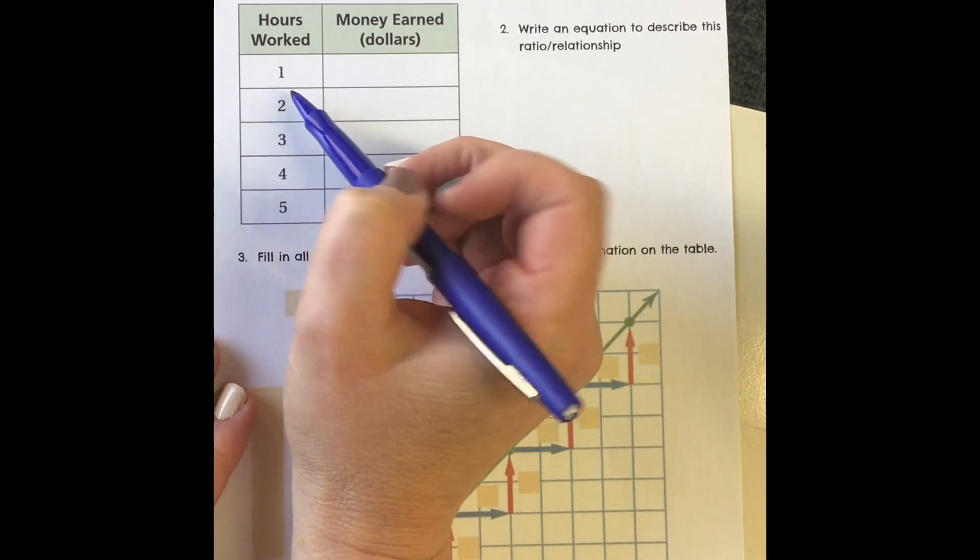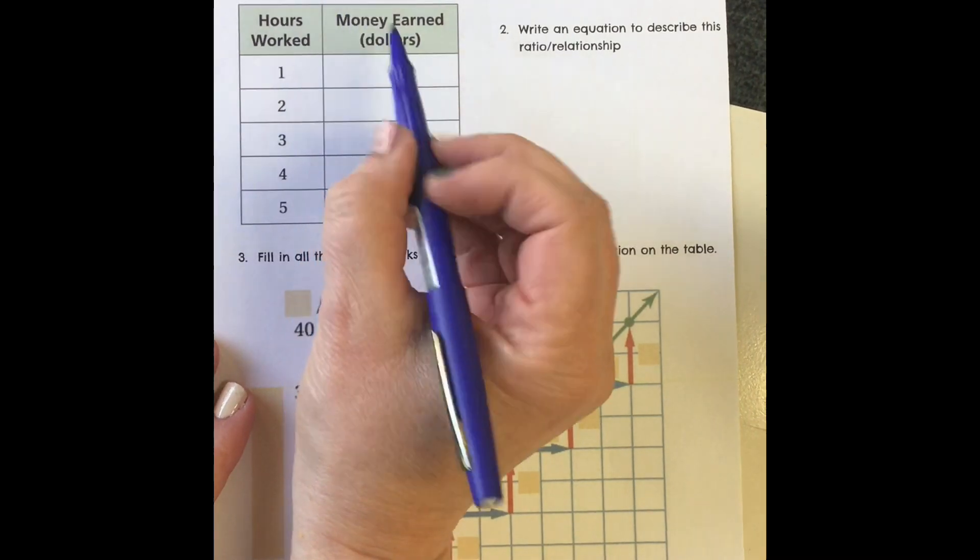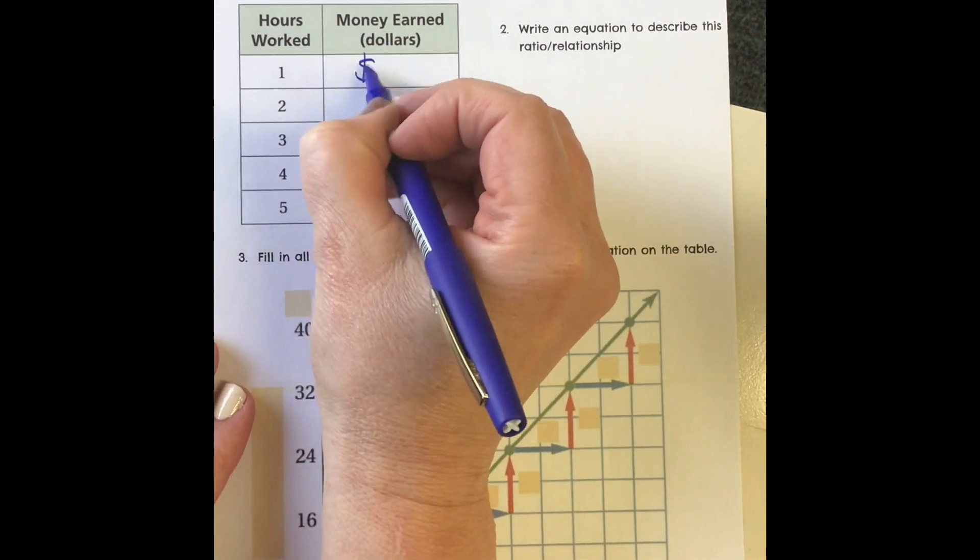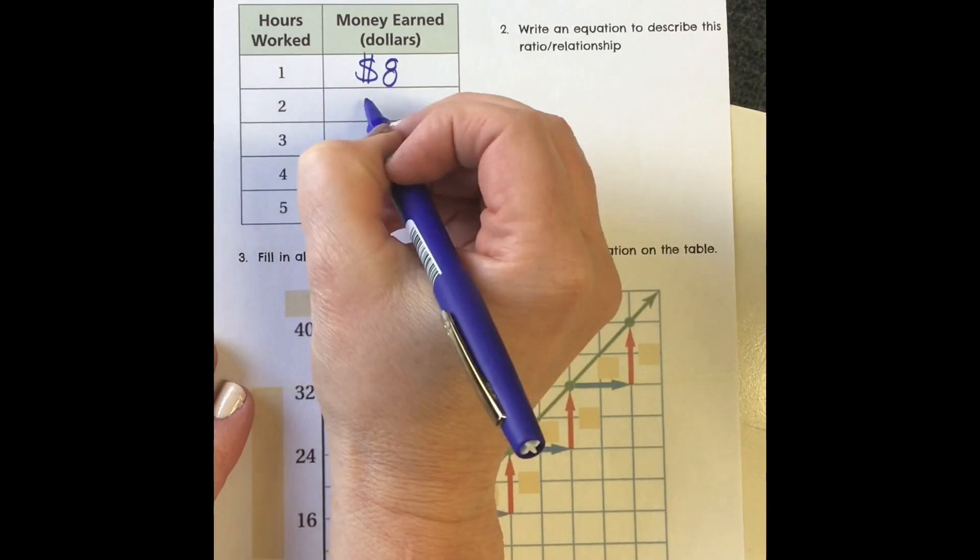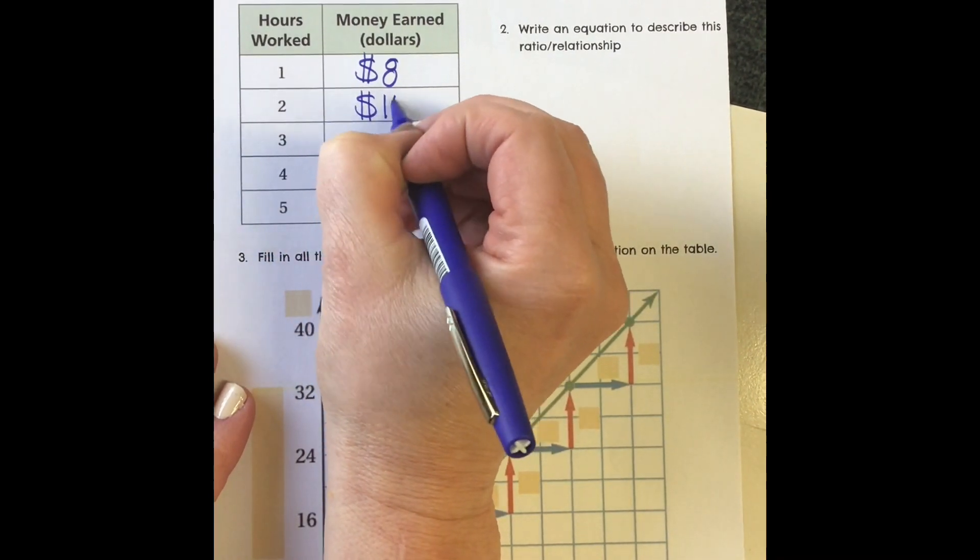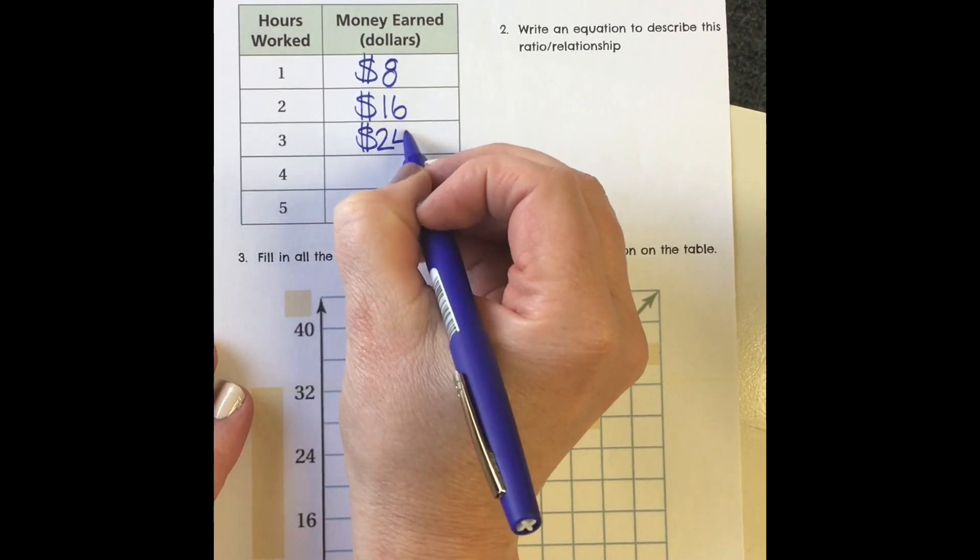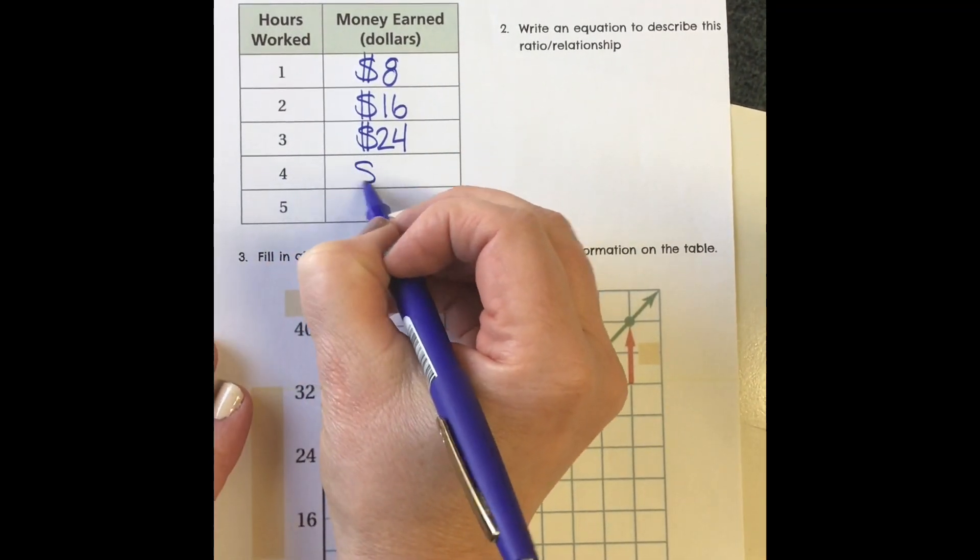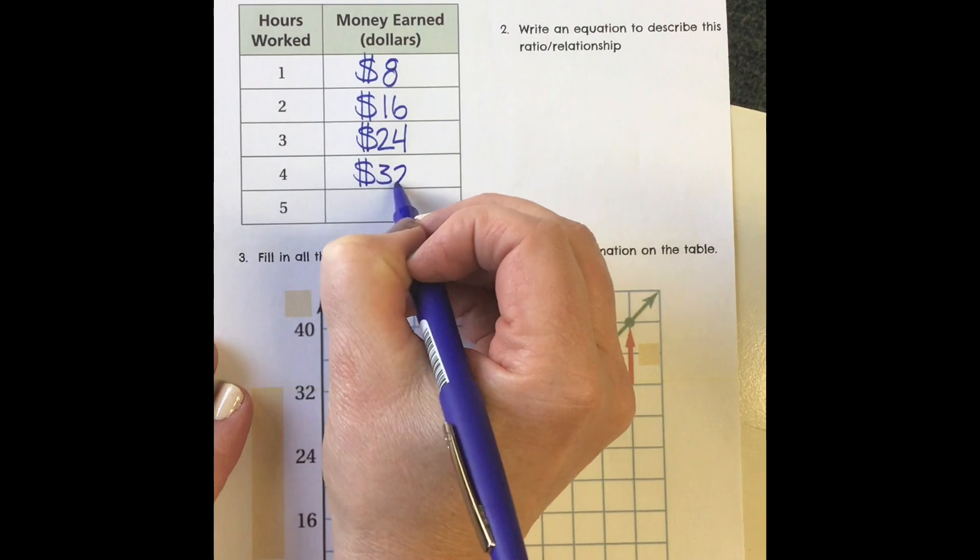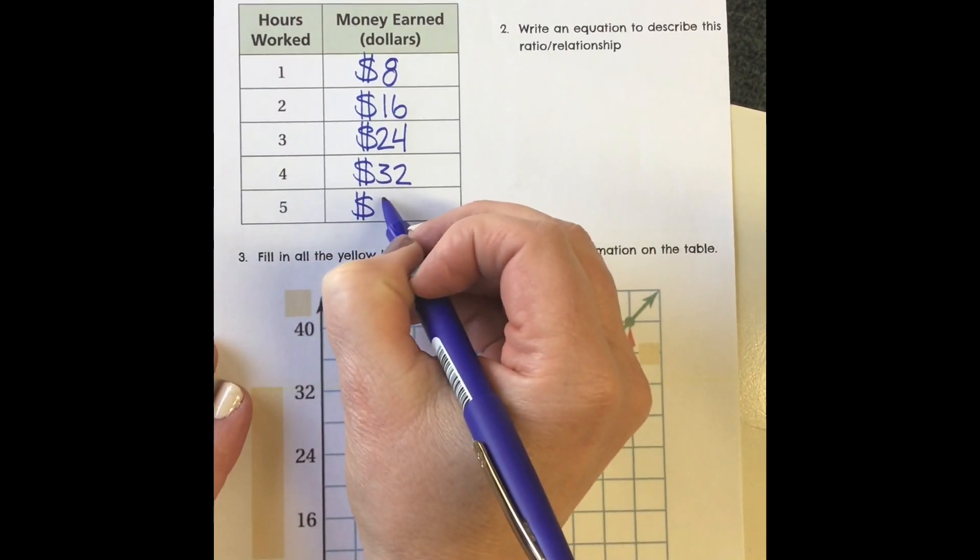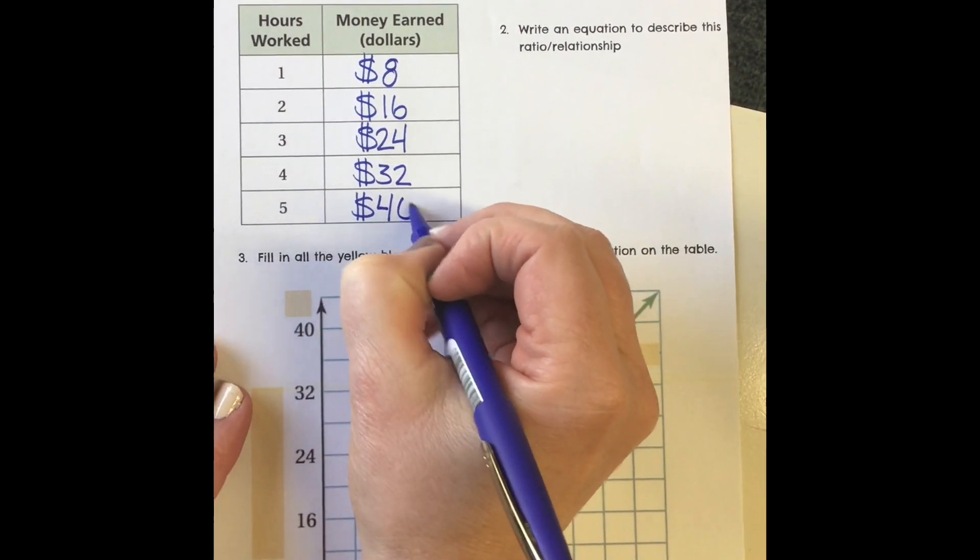For one hour of work, that's 1 times 8 per hour, so you'll have earned $8. For two hours, 2 times 8 gives $16. 3 times 8 is $24, 4 times 8 is $32, and for five hours of work, it's $40.